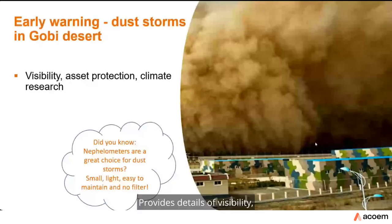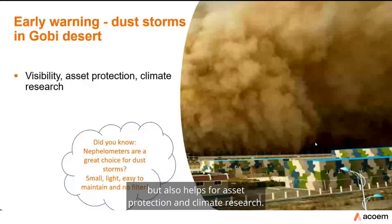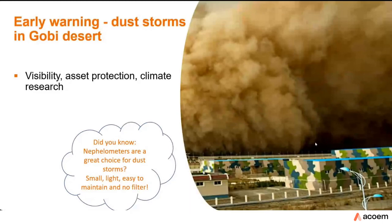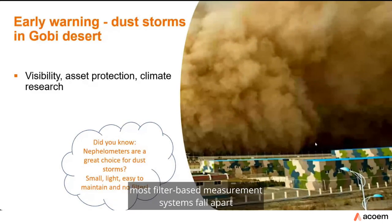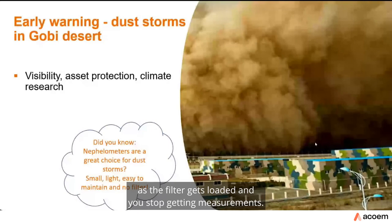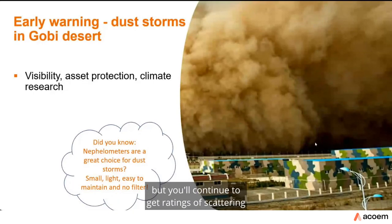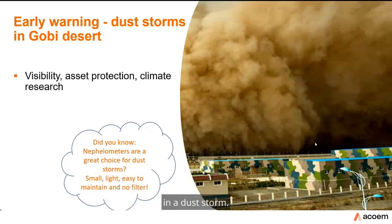Another application is dust storm monitoring. In the Gobi Desert, dust storms move across China and there is a whole monitoring network providing an early warning system for visibility, asset protection, and climate research. Typically in dust storm areas, most filter-based measurement systems fail as the filter becomes loaded, whereas the nephilometer can read very high measurements for quite a long period of time, continuing to get scattering readings well after most instruments have stopped.